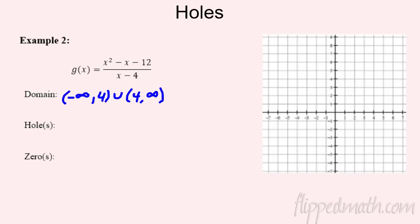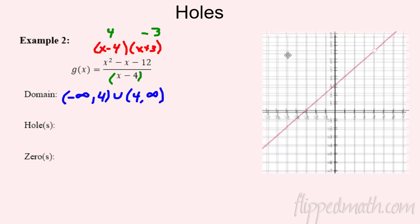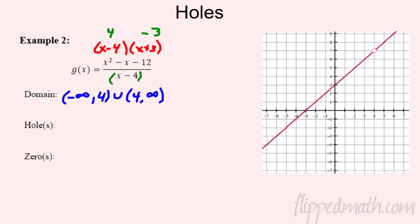Now what about the top — when does the numerator equal zero? What multiplies to 12 and adds or subtracts to give negative one? Factoring gives (x - 4)(x + 3). So we have x = -3 as a possible zero, and x = 4 — but wait, I already used x = 4 down in the denominator: (x - 4) is down there too. Interesting.